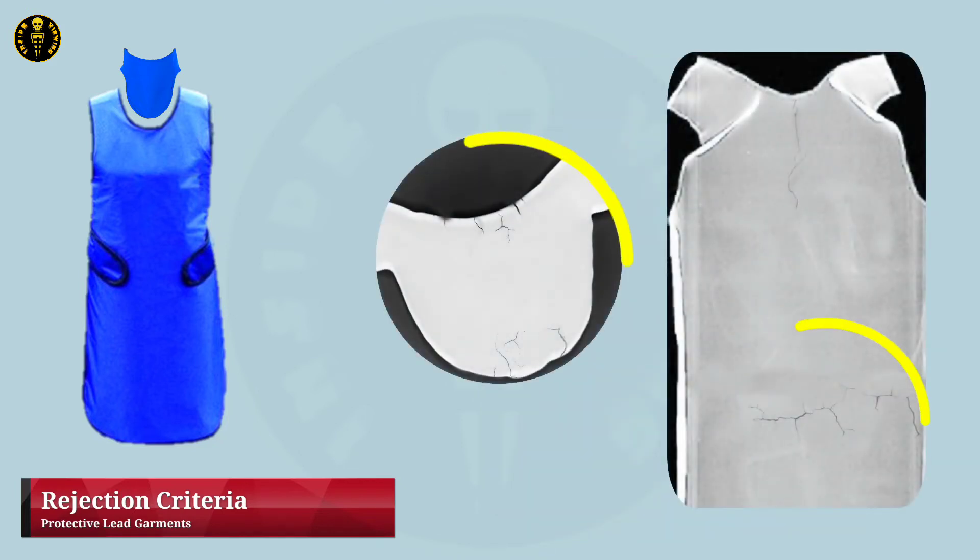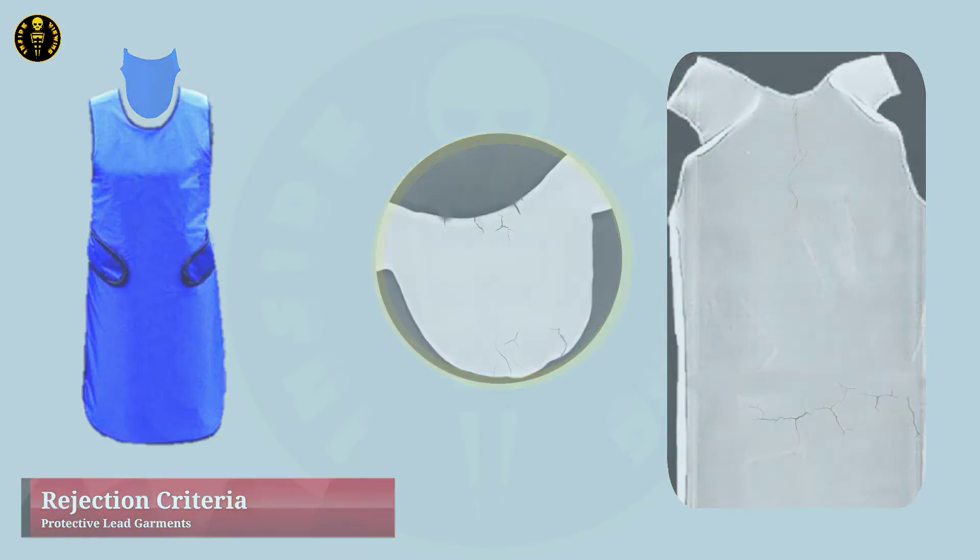If the defects are over critical areas such as the gonads or thyroid, aprons should be replaced if the sum of defects exceeds 11 mm² or a 3.8 mm diameter circular hole. A thyroid shield with greater than 11 mm² defect should be replaced immediately.